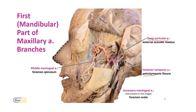The second branch is the anterior tympanic artery, which enters the tympanic cavity by passing through the petrotympanic fissure. It supplies the inner surface of the tympanic membrane — the outer surface is supplied by the deep auricular artery, while the inner surface is by the anterior tympanic artery.